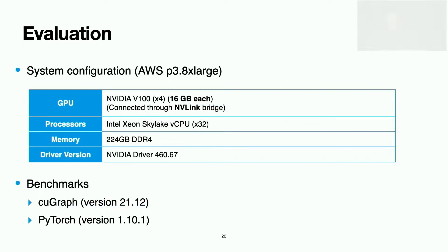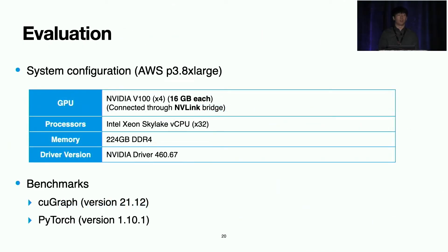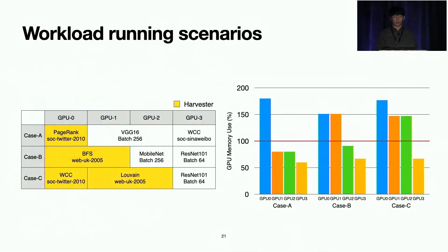Now onto our evaluation. All experiments are done on an AWS instance with four GPUs connected with NVLink. Graph analytics benchmarks are implemented with CuGraph, and DNN training workloads are implemented with PyTorch. We evaluate three scenarios in the shared multi-GPU server — cases A, B, and C — each consisting of a mixture of graph analytics and DNN training workloads. Workloads highlighted in yellow are harvesters, which over-subscribe memory and harvest neighbor GPU memory.